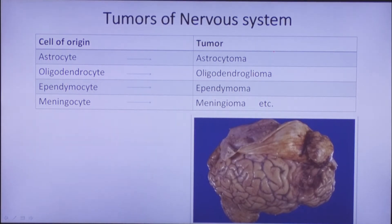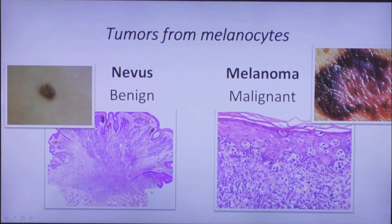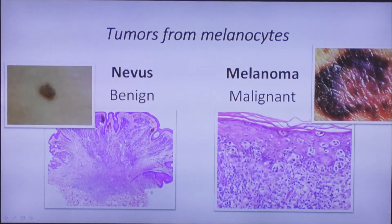Names of tumors of the nervous system are formed by the usual principles: if the cell of origin is an astrocyte, the name of the tumor will be astrocytoma, and so on. On the picture you see a meningioma — a benign tumor, but notice how it pressures on the brain, which is why benign tumors can also be dangerous. Tumors from melanocytes include nevus and melanoma. Nevus is a tumor-like formation that everyone has, while melanoma is one of the most malignant tumors — in most cases it appears de novo, but sometimes we can see malignant transformation of nevus to melanoma.